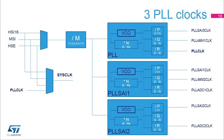STM32L4 devices embed three phase-locked loops, each with three independent outputs. The input clock of the PLL can be selected between HSI16, MSI, and HSE. The main PLL can provide the system clock. The different PLL outputs can be used for the two serial audio interfaces, ADC interface, USB, random number generator, and SDMMC peripherals.